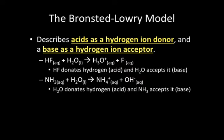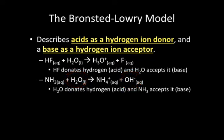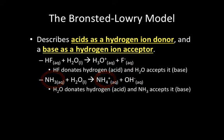In the second Bronsted-Lowry equation, NH3 + H2O gives us NH4+ and OH-. H2O donates the hydrogen to NH3, so H2O becomes OH- — since it donates the hydrogen, it is the acid. NH3 accepts the hydrogen to become NH4+, making it the base. The Bronsted-Lowry model is more in-depth and lets us classify more things as acids and bases.